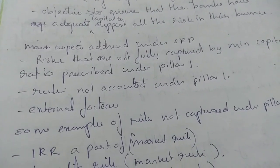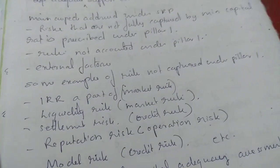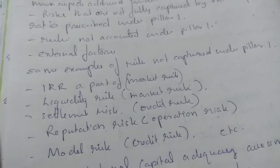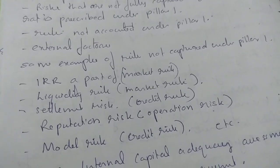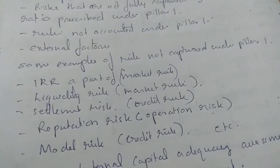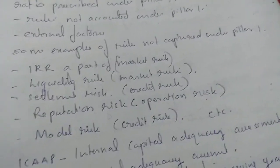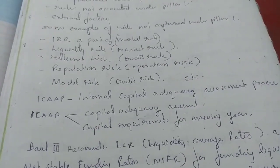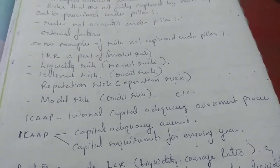Some examples of risks not captured under Pillar 1 are: interest rate risk (IRR), which is part of market risk; liquidity risk, also part of market risk; settlement risk; reputation risk; operational risk; and model risk. Next is ICAP — Internal Capital Adequacy Assessment Process.